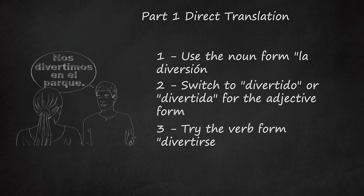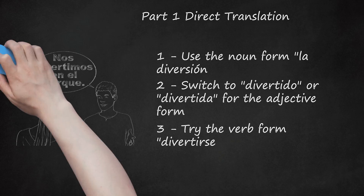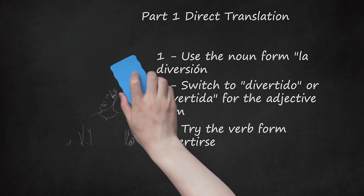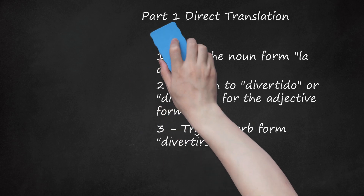Conjugations of 'divertirse': first person singular — me divierto; second person singular — te diviertes; third person singular — se divierte; first person plural — nos divertimos; second person plural — os divertís; third person plural — se divierten. Example: 'Nos divertimos en el parque' — We have fun at the park.